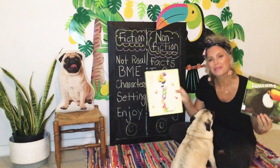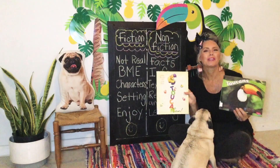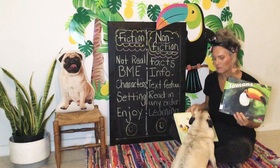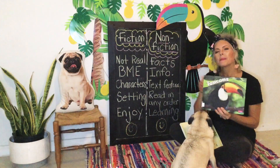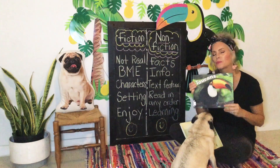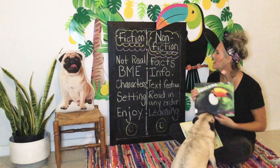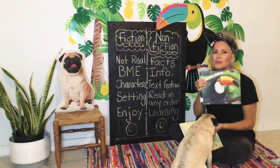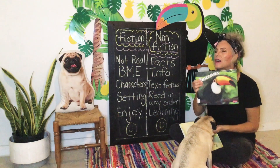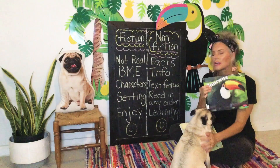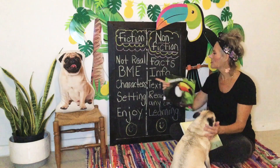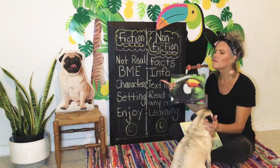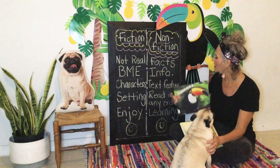So before we do, let's review the different kinds of texts. We're going to do non-fiction first because we read this one yesterday. Non-fiction books give us facts. We read non-fiction texts for information — facts and information. Info is short for information.